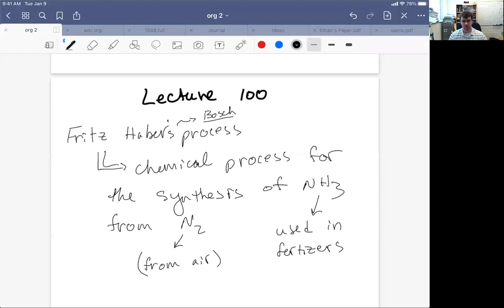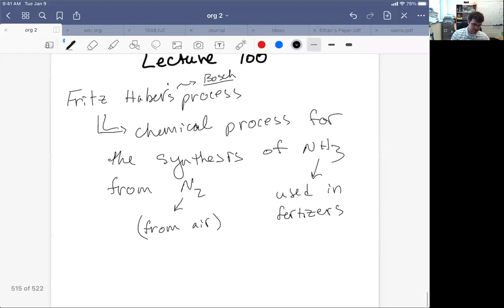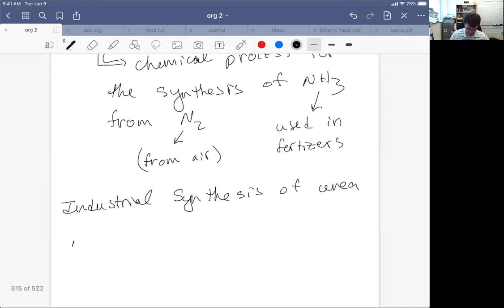Now one thing that ammonia can be used for is the industrial synthesis of urea. This is one of my favorite industrial processes. What we do is we take NH3 plus CO2, we apply high heat and high pressure, and we form urea.